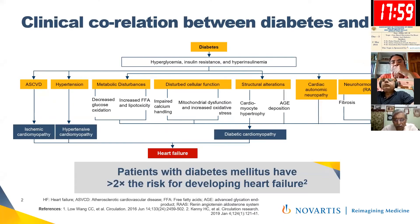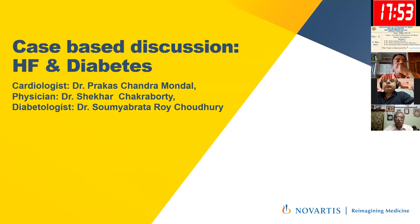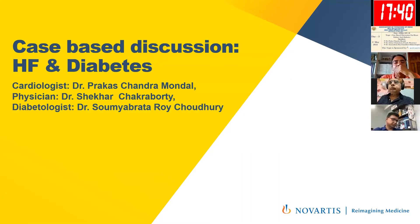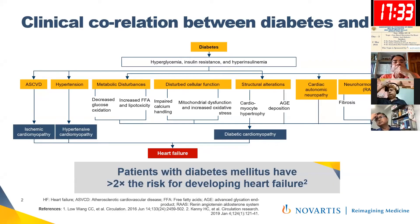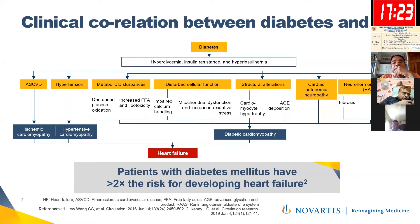We are going to discuss a combination of heart failure and diabetes. Both are multi-system diseases. Heart failure is not a disease of the heart only, and diabetes also is a multi-system disease with implications throughout the body. In internal medicine, the key changes are hyperglycemia, insulin resistance, and hyperinsulinemia. Insulin resistance and hyperinsulinemia are the main areas of interest because most cardiovascular complications are related to these two.